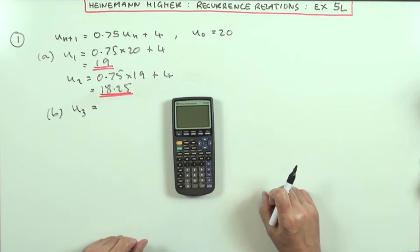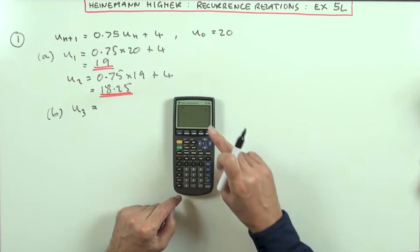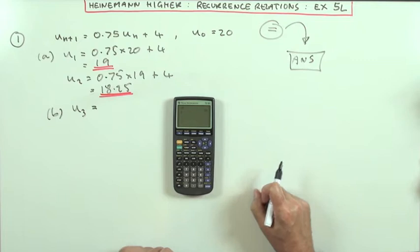For that, I'm going to use the answer function here. I could start at the 20. So I'll clear the screen, put 20 into it, press equals. As soon as I've pressed equals, that number has been stored in that particular memory in the calculator called answer. It records the last result you got from pressing equals.